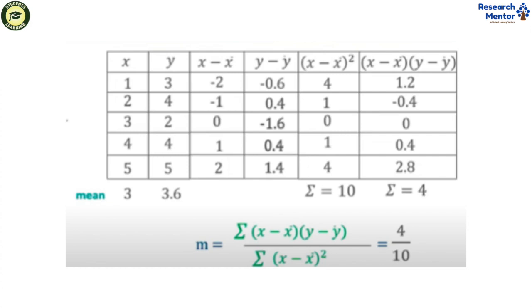Then calculate the sum of (x minus x̄) squared, that is 10, and (x minus x̄)(y minus ȳ), that is 4. Then we can calculate the value of m. The value of m equals 4 divided by 10, that means m equals 0.4.